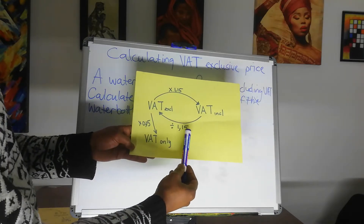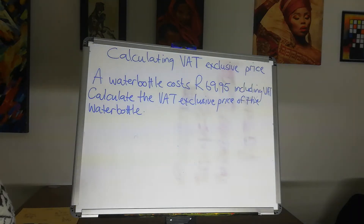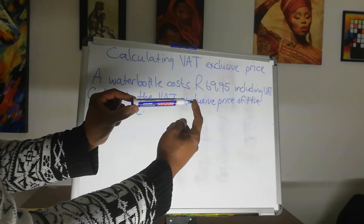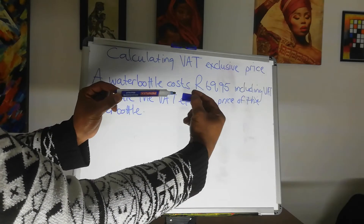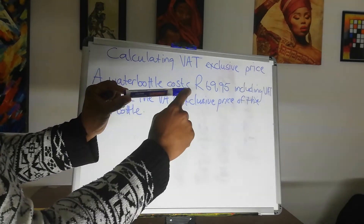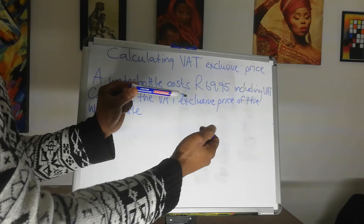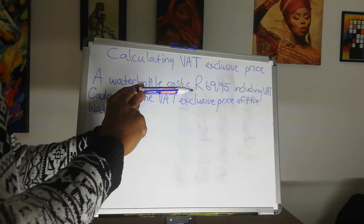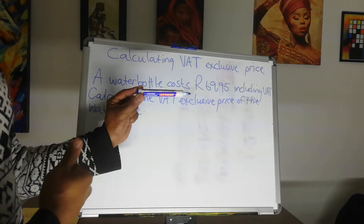Now, let's look at why we divide and why 1.15. You can also use this in exams to help yourself. If you look at the pen, the pen is 100% of its length — this is the total length of the pen. However, when we put the cap onto the pen, the length will increase, meaning that it is now more than 100%. So if we take the cap away, it goes back to its original state, which is 100%.